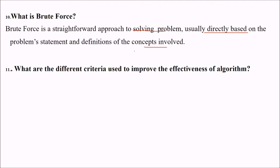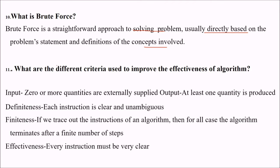What are the different criteria used to improve the effectiveness of algorithm? First, inputs means zero or more quantities are externally applied. Then we have output, at least one quantity is produced. Then definiteness means each and every instruction should be clear and unambiguous. What do we mean by finiteness? If we want to trace out the instruction of an algorithm, then for all cases, the algorithm terminates after a finite number of steps. Finiteness means terminating after a finite number of steps. What is effectiveness? Every instruction should be very clear and effective.